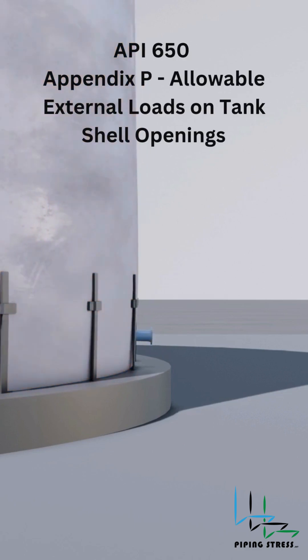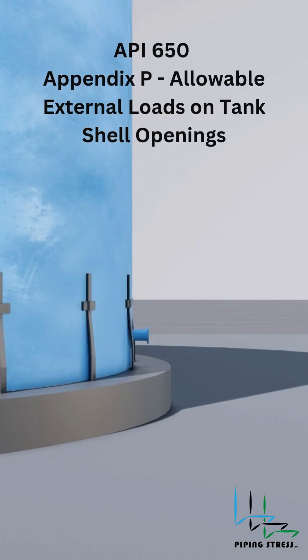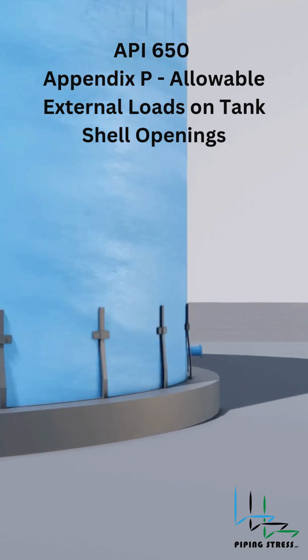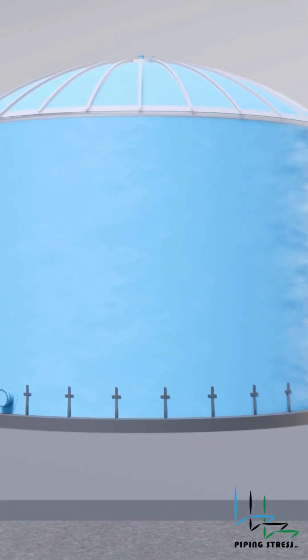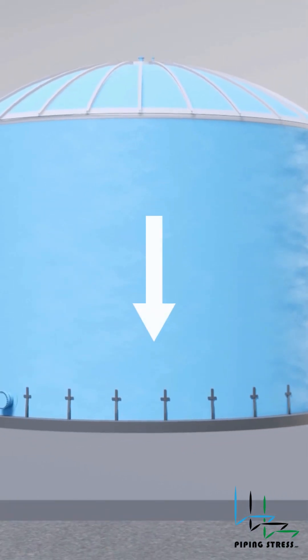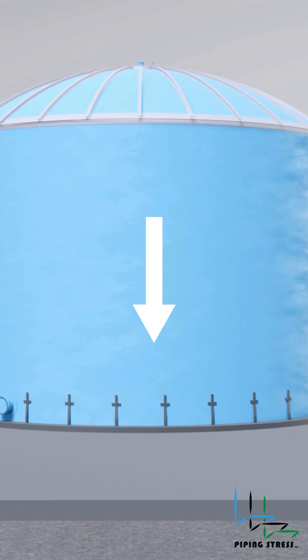API 650 explains how to calculate the allowable nozzle loads in detail. The area where the storage tanks are located is exposed to excessive loads, which is why over time, the tank settles into the ground.